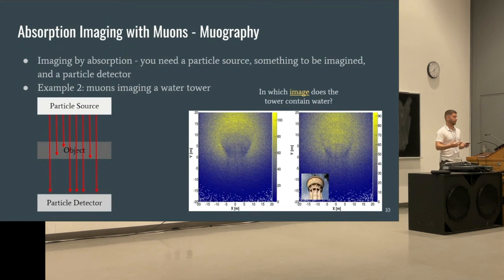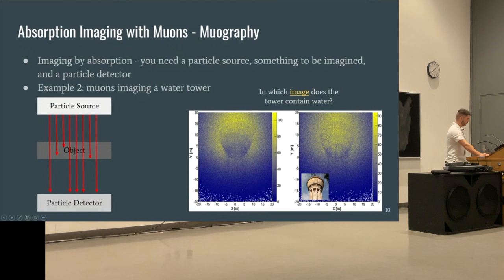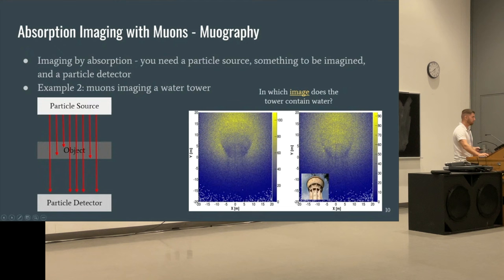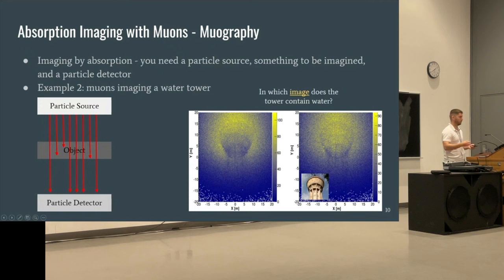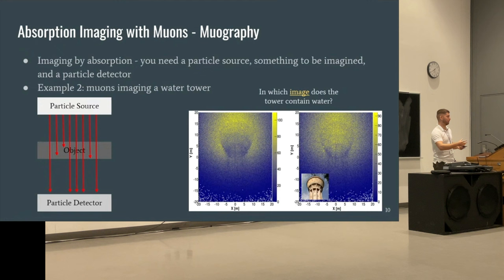It's the exact same concept with muography, where we use muons to image internal structure. Here's a good example: a water tower, and the question is which image shows the tower actually containing water. You aim a muon telescope at the water tower — yellow means more muons observed, blue means fewer. You can see the tower structure itself because concrete absorbs some muons, and you can also see that this tower contains water because water absorbs more muons than an empty tower would.